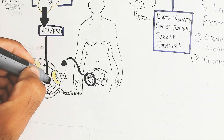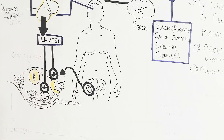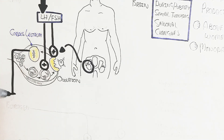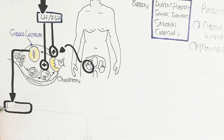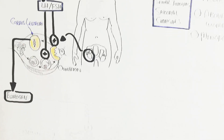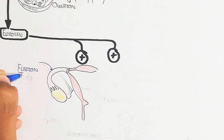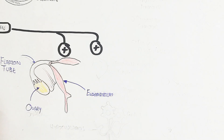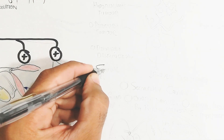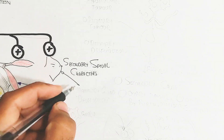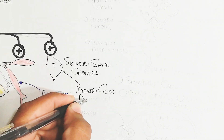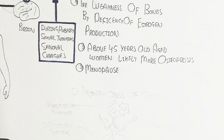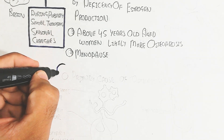LH and FSH target the ovaries — two ovaries are present as a pair. Follicle stimulation leads to corpus luteum formation, which produces estrogen. Ovulation is primarily driven by LH, while FSH triggers follicle maturation from primary to secondary stage. Estrogen then targets the endometrium wall for thickening, supports placenta formation during pregnancy, and enhances secondary sexual characteristics such as mammary gland development.